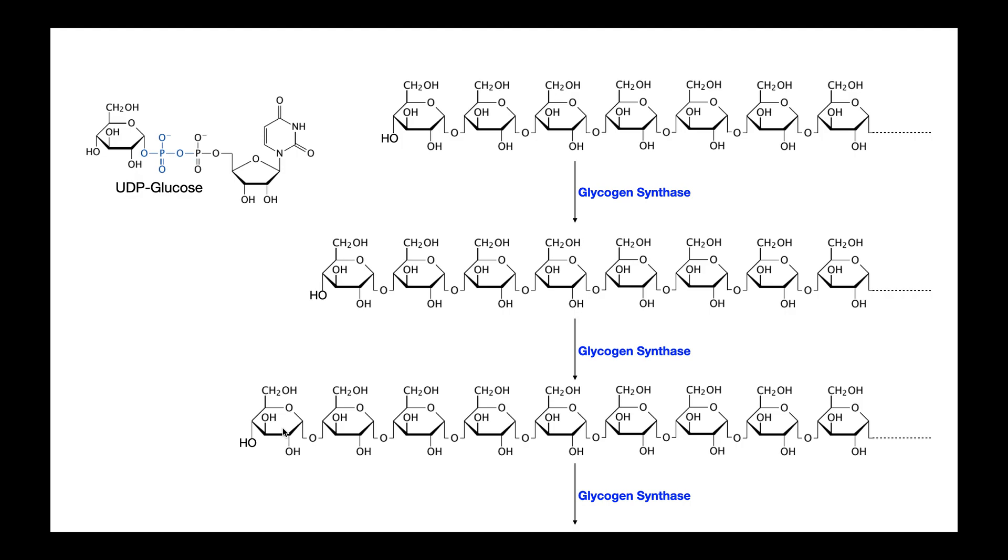Remember that the glucose donor is this molecule shown over here called UDP glucose. This is an activated form of glucose, and these two phosphates with the nucleotide make this carbon at the one position extremely reactive. That's going to play a role in the mechanism of glycogen synthase, and that's what we're going to look at right now.